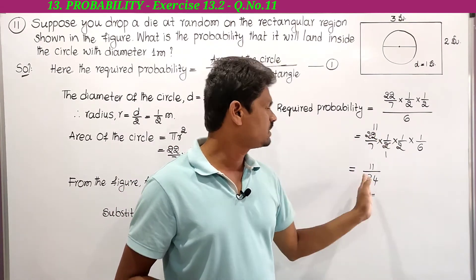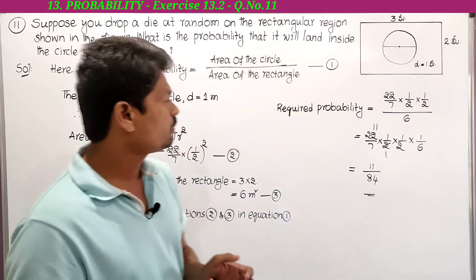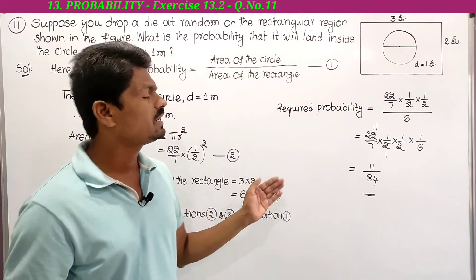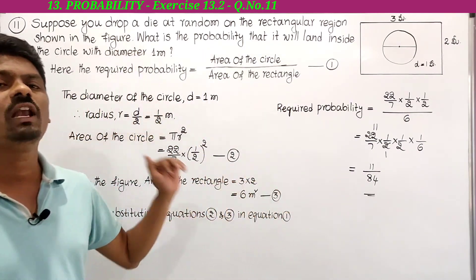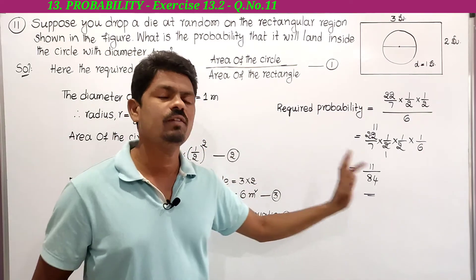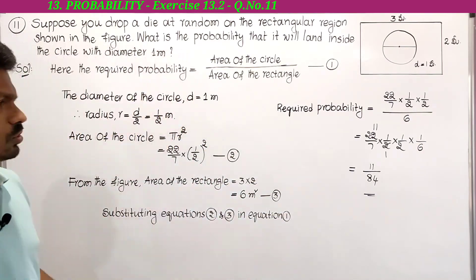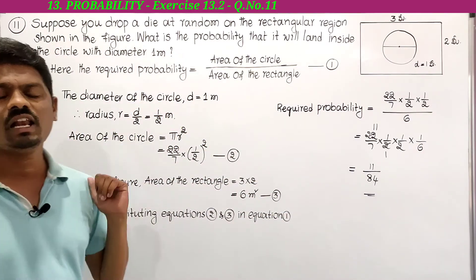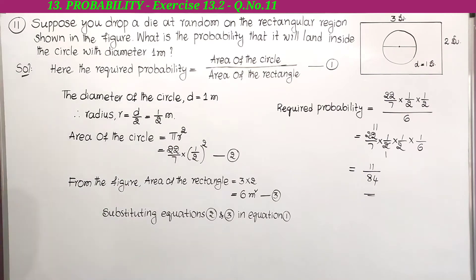Therefore, the probability that the die will land inside the circle is 11/84. This was the 11th problem — next we have to solve the 12th problem.